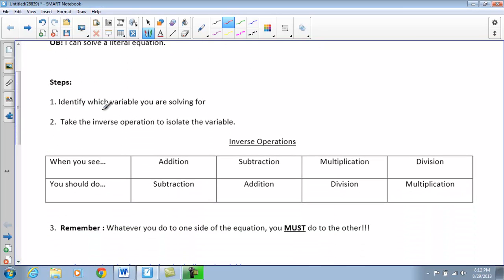So, the biggest thing when we're looking at our steps is to start out by identifying which variable you're solving for. What I like to do is kind of box it in or put a circle when we work through the examples to see what we're actually solving for. When we solve equations, we take the inverse operation to isolate that variable. We're still going to follow those same steps.